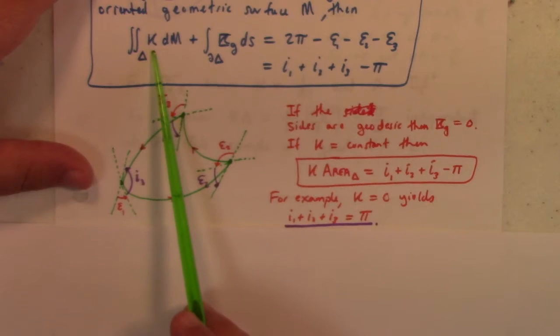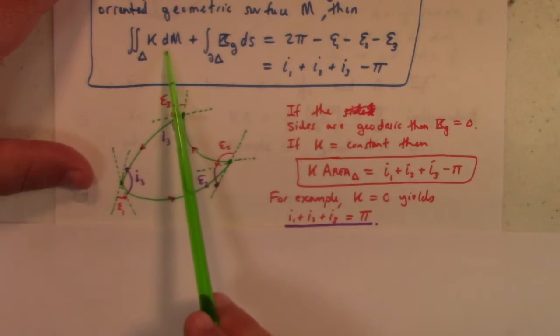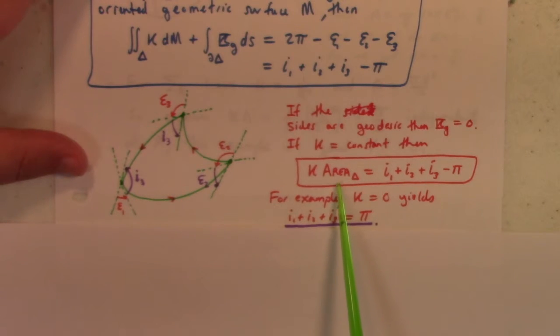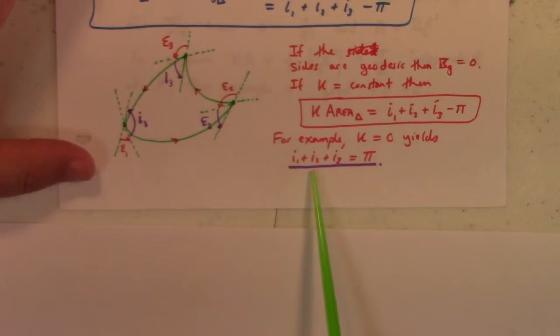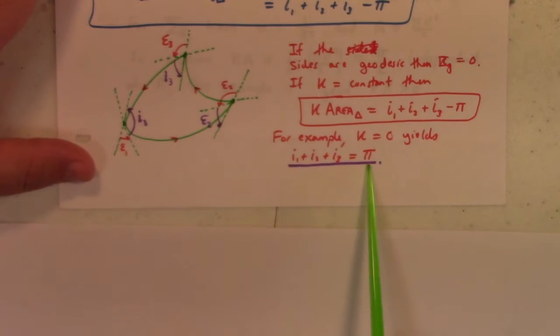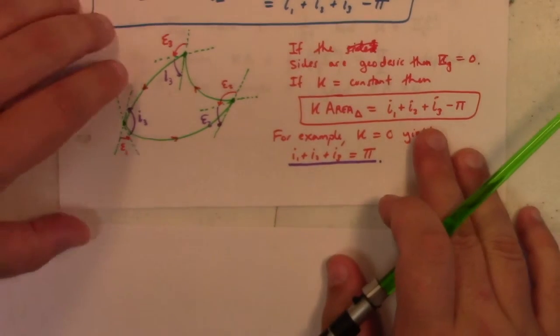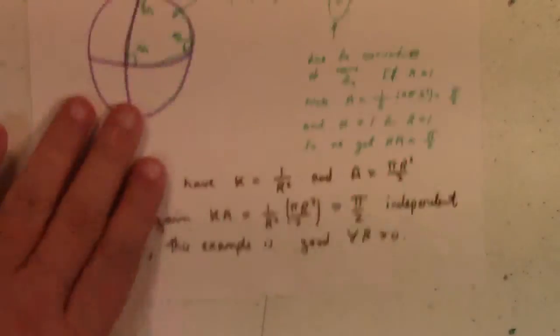If in addition you have constant Gaussian curvature, then you can pull the k out and you just have the integral over the triangle dM. But dM is the area form, so that integral just gives you area. You get this really simple thing to talk about even to children: that the Gaussian curvature times the area of a triangle is the sum of the interior angles minus π. In particular, when the curvature is zero—in the Euclidean context—you get the sum of the interior angles of a triangle is π.